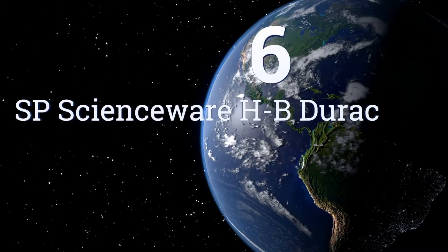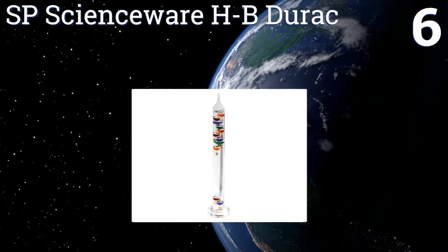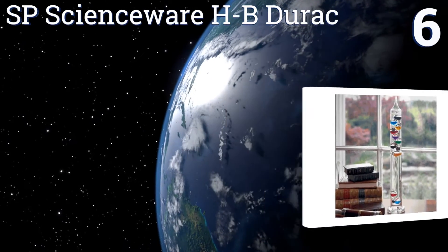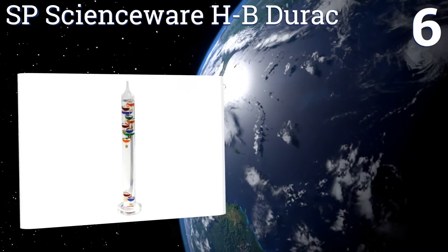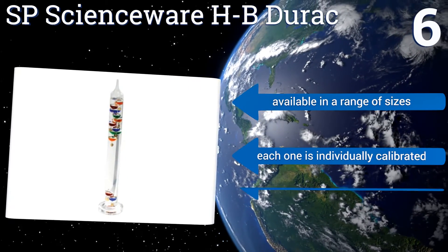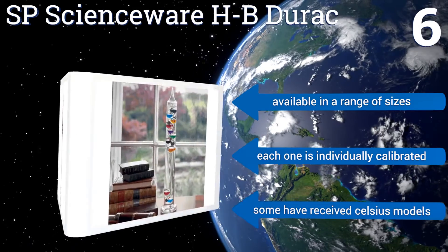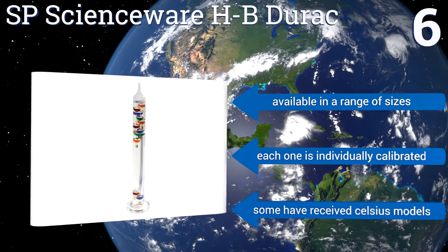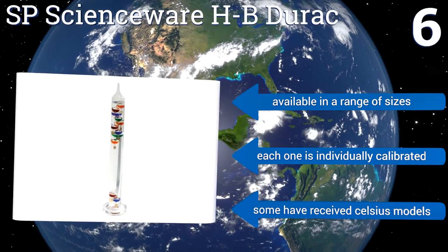Coming in at number 6 on our list. This SP Scienceware HB Durac is ideal for somebody who just wants an affordable option to add a little extra flair to a kitchen counter or desk. Its five floating spheres accurately measure the temperature to within 4 degrees. It's available in a range of sizes, and each one is individually calibrated. However, some people have received Celsius models.